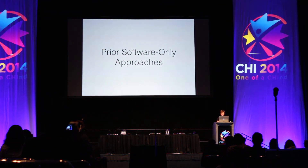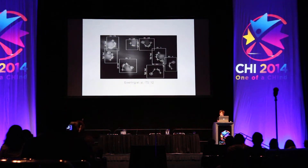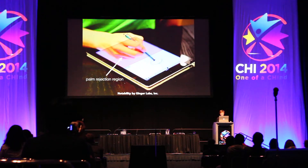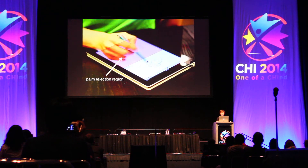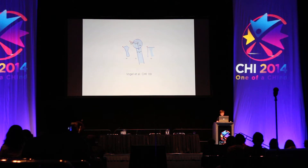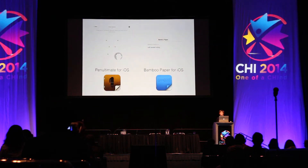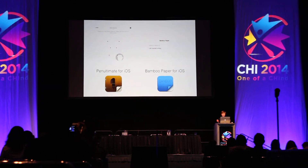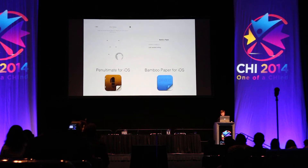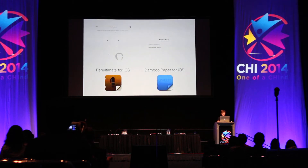People have tried various approaches, including identifying palm regions from a camera image, or having an area to rest one's palm where all input is ignored. More sophisticated geometric models are also possible. Several commercial applications do implement some sort of palm rejection, but all the ones we reviewed require the user to define their handedness or specify their handwriting mode, suggesting a heuristic approach.